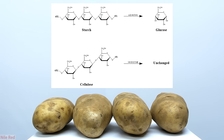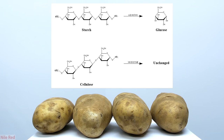When we eat things that are high in starch, like rice, potatoes, corn, etc., we can break down the starch to glucose and use it for energy. However, just this difference in how the glucose is linked together means that when we eat things high in cellulose, like vegetables or fruits, most of it leaves our body undigested.